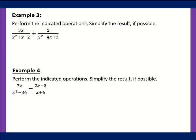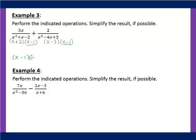From here on it's probably going to be a factoring issue. For example 3, to get our common denominator we first need to factor the denominators. To multiply to get negative 2 and subtract to give 1 we get (x plus 2)(x minus 1). For the second, multiply to get 3 and add to get negative 4: that's (x minus 3)(x minus 1). The two denominators share x minus 1, so the LCD must contain x minus 1, x plus 2, and x minus 3.